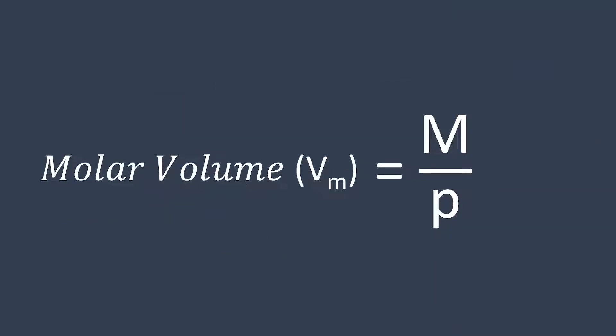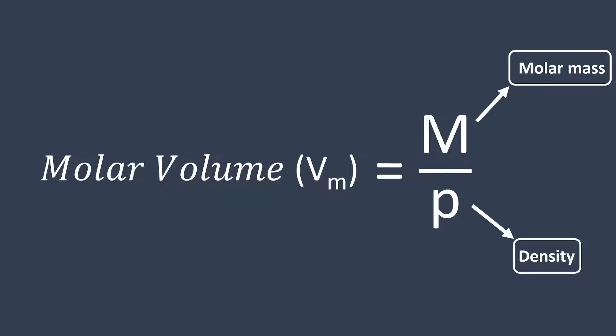Here is an equation you might come across for molar volume, where the big M represents molar mass and P represents density. This equation is only useful at constant temperature and pressure, known as STP. At STP, the molar volume is the same number for all ideal gases — it's a constant — so this equation is mostly just for your information and you most likely will not need to use it.